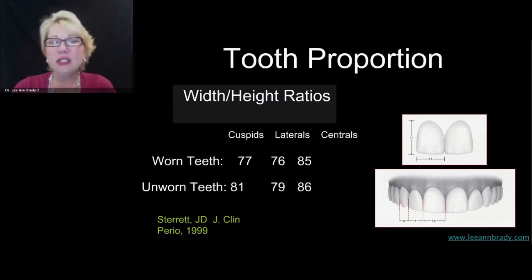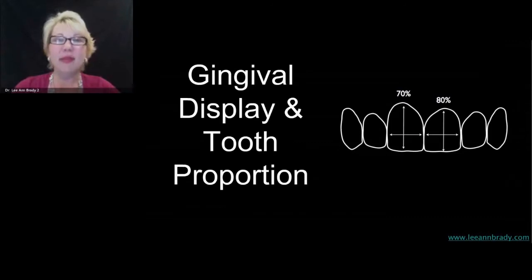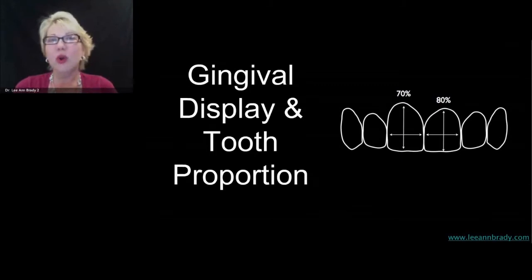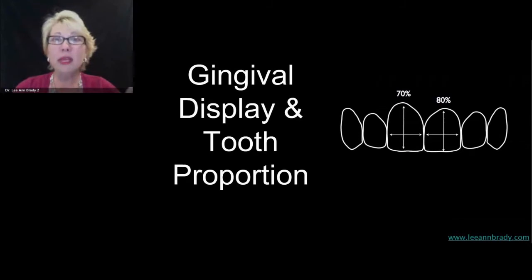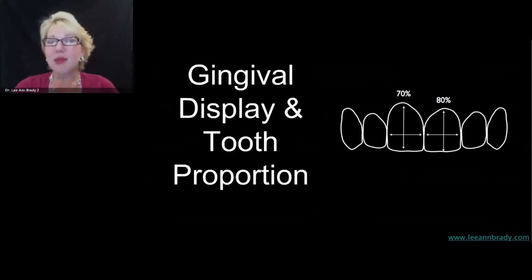There's a little variability between centrals, laterals, and canines, but I usually shoot for 75 percent width-to-length ratio, then play with those numbers to see what looks most aesthetic. If someone has excessive gingival display — a gummy smile — I may play with longer teeth at 70 percent and ask: can I minimize the gingival tissue and still have attractive tooth proportion? I can adjust back to 75 if 70 percent looks too long and skinny. The only reason I'd consider 80 percent is someone with a very low lip line and essentially no gingival display.